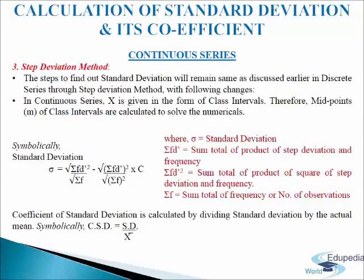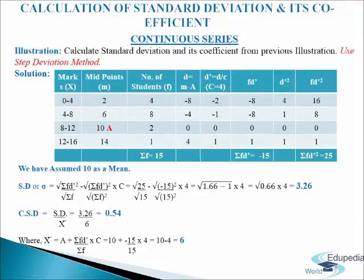Next we come to calculation of standard deviation and its coefficient in continuous series using step deviation method. We follow the same steps as we followed in case of discrete series. The only thing to remember is that instead of x we use m, because x is in the form of class intervals. The formula is: SD equals to the square root of (sigma fd dash squared divided by sigma f) minus (sigma fd dash divided by sigma f) squared, multiplied by c. Where sigma fd dash equals to sum total of product of step deviation and frequency, sigma fd dash squared equals to sum total of product of squared step deviation and frequency, sigma f equals to sum total of frequency or number of observations, and c equals to common factor. Coefficient of standard deviation is calculated by dividing standard deviation by the actual mean; symbolically CSD equals to SD divided by mean.